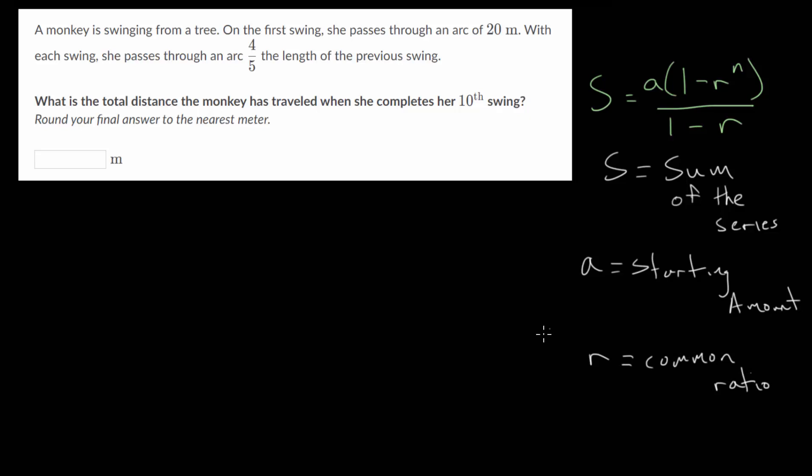And R is the common ratio, that's the number we multiply by to go from one term to the next in the series. And N is just the number of terms in the series. So now that we understand the basic idea of this formula, let's jump in and try to solve some of these problems.